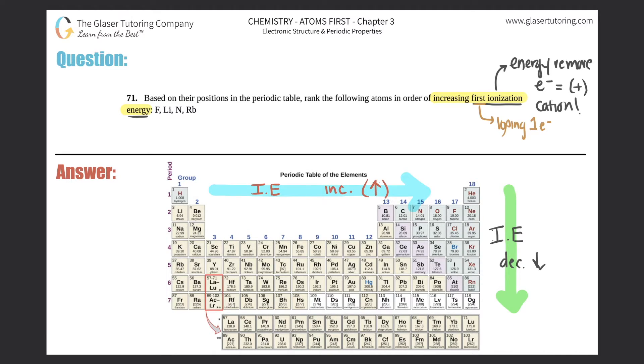I'm going to just circle the atoms that they gave me here. So I have fluorine, I got lithium which is over here, nitrogen, and rubidium which is down here.